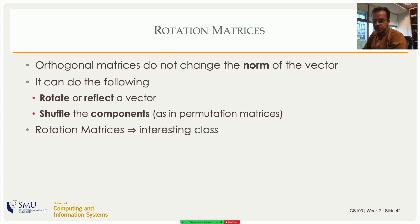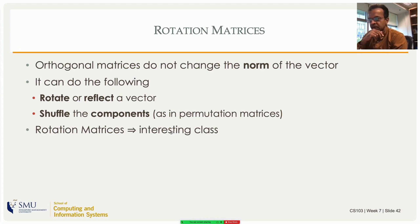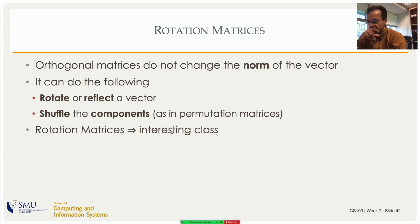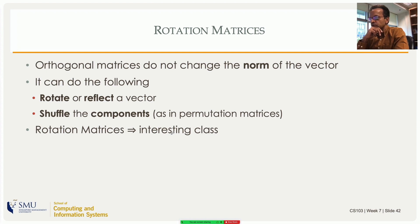Rotation matrices are an interesting class of matrices, especially from the perspective of physical sciences — very interesting for a physicist. I know this is going slightly outside your remit of computer science, but I like it so I'll tell you. If you take a point in space and rotate the spatial axis — which is the same as rotating the vector — the size of the vector doesn't change. If you take the distance between two points, the distance doesn't change; it is an invariant.